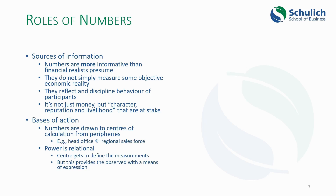The second role of numbers is that they serve as bases of action. Here he's drawing on Bruno Latour again, who argues that numbers are used to draw information from the peripheral regions of an organization or country to some sort of center of calculation. A specific example: regional sales forces are measured on their sales and that information gets transmitted to the head office, where decisions are made. Although this is a concrete power relationship — where the center gets to define what the measurements are — these measurements also provide the people being observed with means of expression. As Foucault notes, power is a relationship.